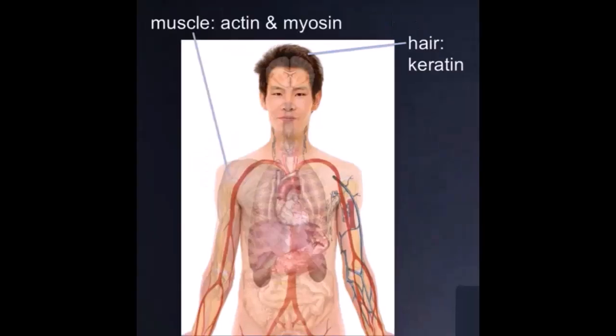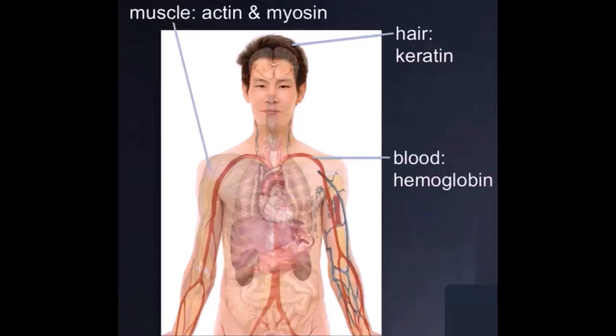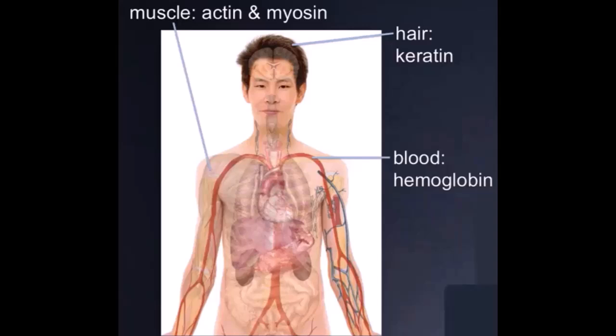Your muscles consist solely of the proteins actin and myosin. Your blood largely consists of hemoglobin. If things in your body are not proteins, such as your bones, then proteins make those things. Enzymes, which are also proteins, can create things like bone or other compounds. Essentially, everything interesting about you is made of protein.